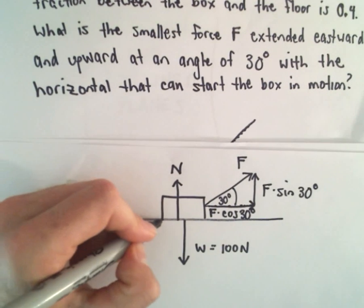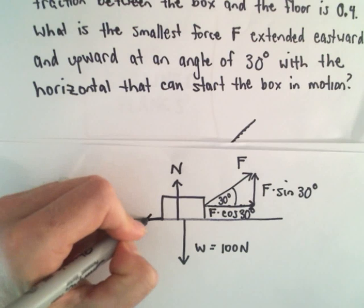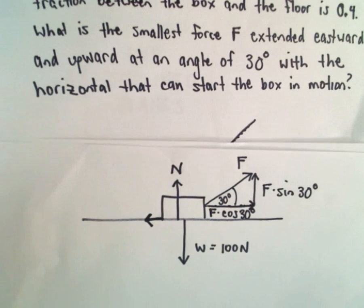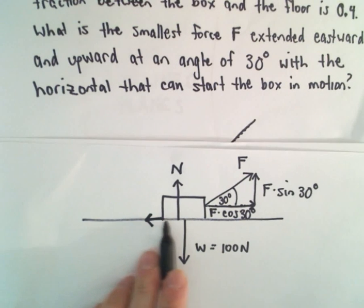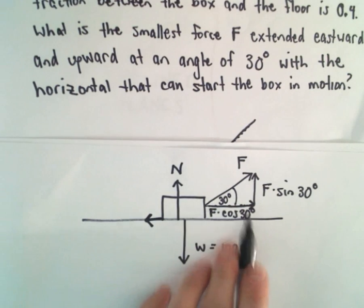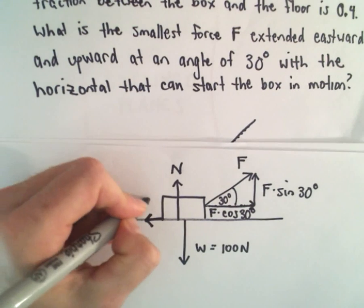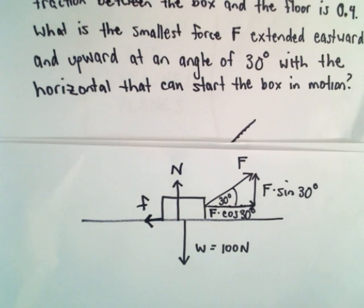And lastly, we've also got this friction, this force that's due to friction, that's acting in the opposite direction. It's resisting this motion to the right. So I'll call that little f for the force from friction.